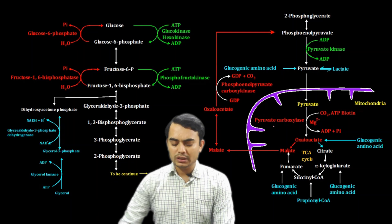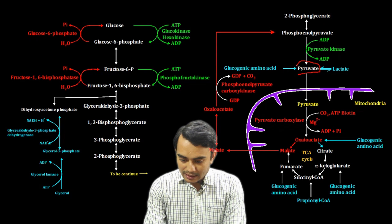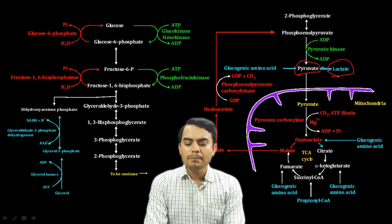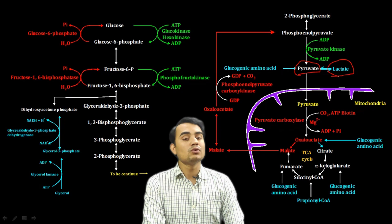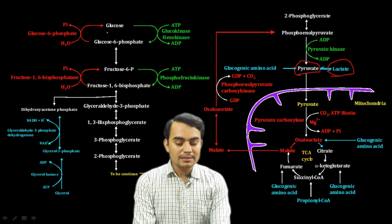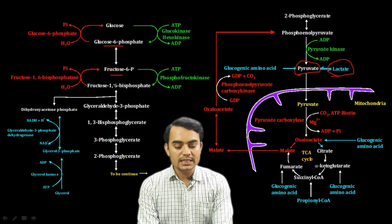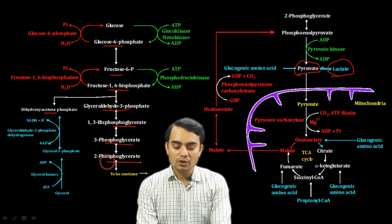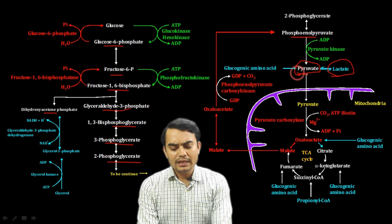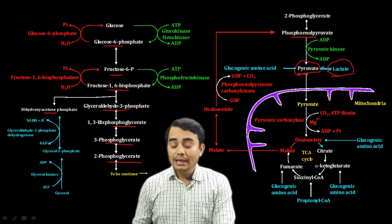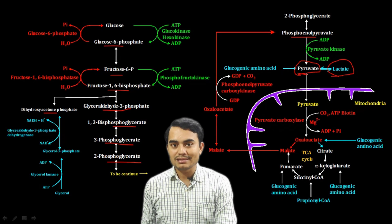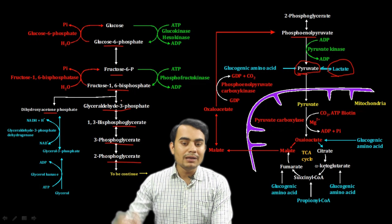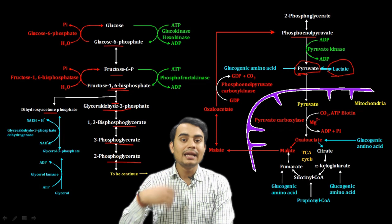Now, looking at the diagram — suppose we need to synthesize glucose from pyruvate or lactate. The normal glycolysis pathway goes: glucose → glucose-6-phosphate → fructose-6-phosphate → fructose-1,6-bisphosphate → glyceraldehyde-3-phosphate and DHAP → 1,3-bisphosphoglycerate → 3-phosphoglycerate → 2-phosphoglycerate → phosphoenolpyruvate → pyruvate. But if we want to go from pyruvate back to glucose, the reversible steps can be reversed — except the three irreversible ones.